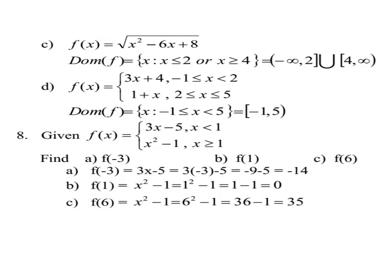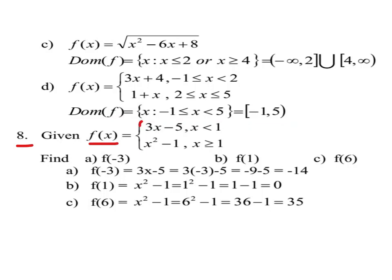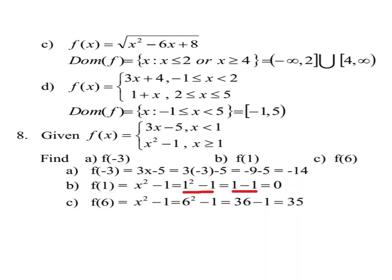Question number eight: given f(x) = 3x − 5 when x < 1, and f(x) = x² − 1 when x ≥ 1. Find f(−3), f(1), and f(6). For f(−3): since −3 < 1, f(−3) = 3(−3) − 5 = −9 − 5 = −14. For f(1): since 1 ≥ 1, f(1) = 1² − 1 = 1 − 1 = 0.